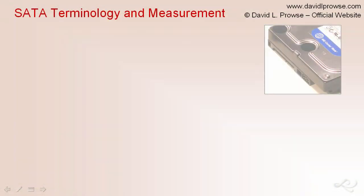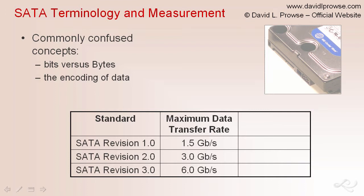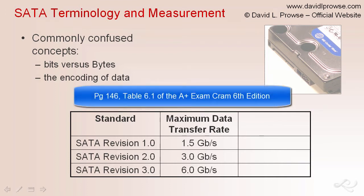I get questions quite often from readers of the A+ Exam Cram about SATA terminology and measurement. Specifically, there are a couple of commonly confused concepts: the first is bits versus bytes — when do you use bits and when do you use bytes when dealing with SATA drives? The second is the encoding of data — how does it work and how does it play into the measurement and amount of data? Let's take a look at the following table, which can be found in the A+ Exam Cram sixth edition.